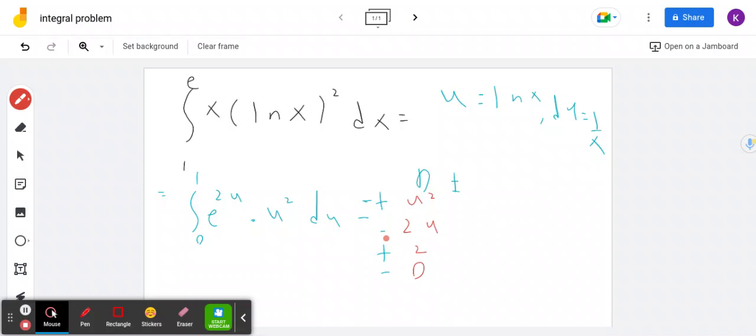But I look at the sign changes. I'm going to integrate e to the 2u. And this is nice because this is 1 half e to the 2u. And then it becomes 1 fourth e to the 2u.